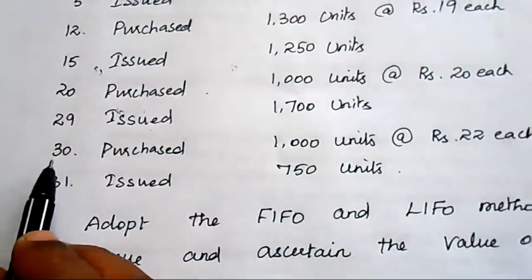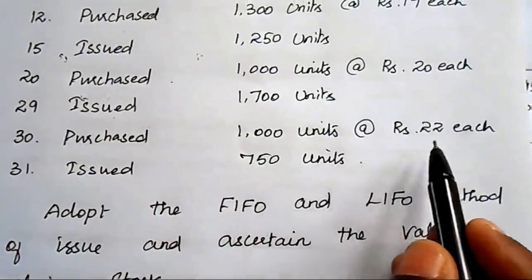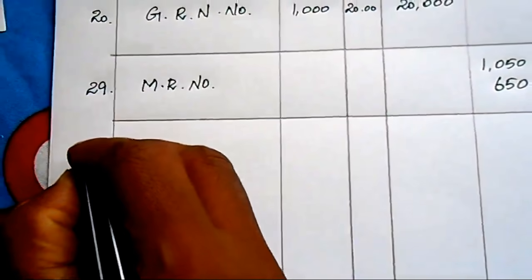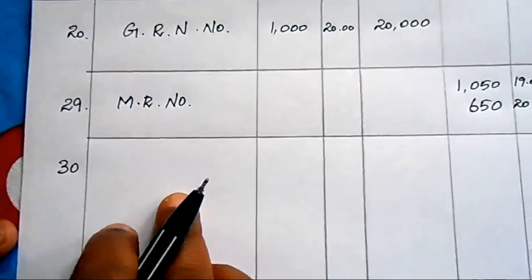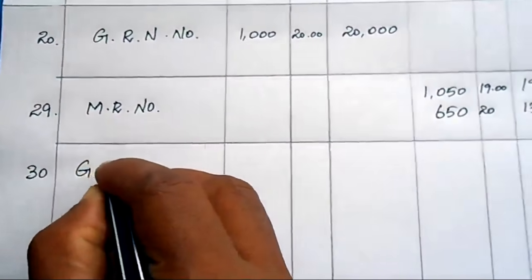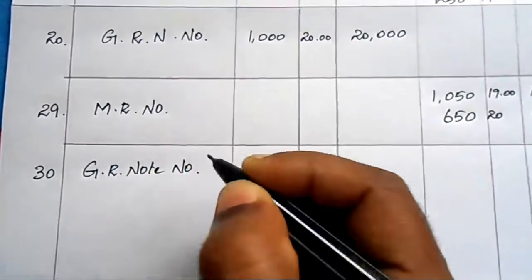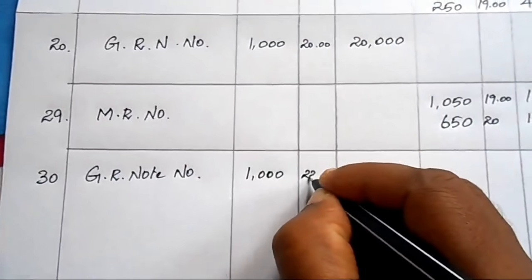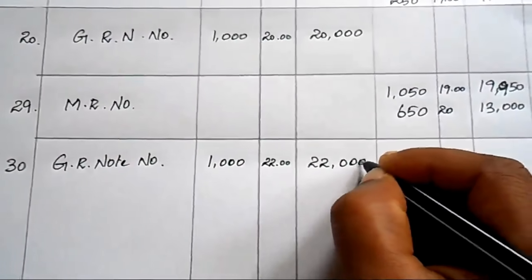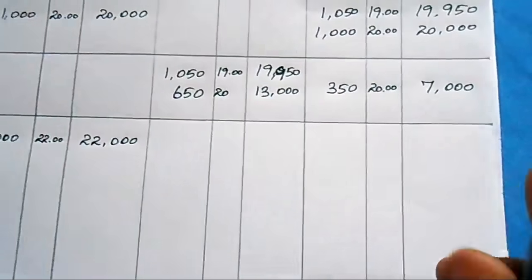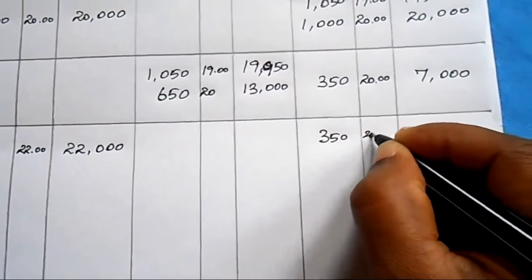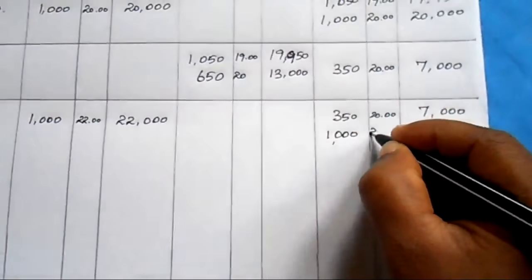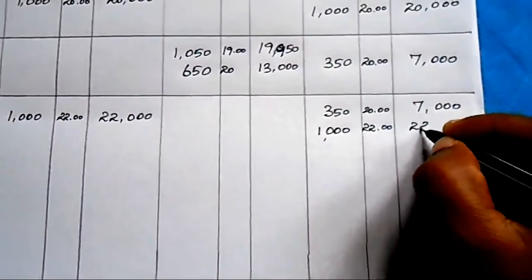On 30th May 2015, purchased 1000 units at ₹22 each. Enter in the receipt column with the Goods Received Note number. Amount: 1000 × 22 = ₹22,000. Update balance: 350 units at ₹20 = ₹7,000, plus new 1000 units at ₹22 = ₹22,000. Total: 1350 units in two lots.